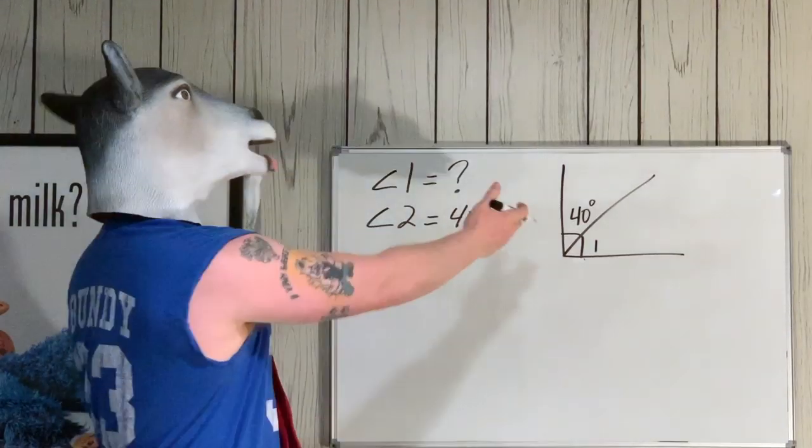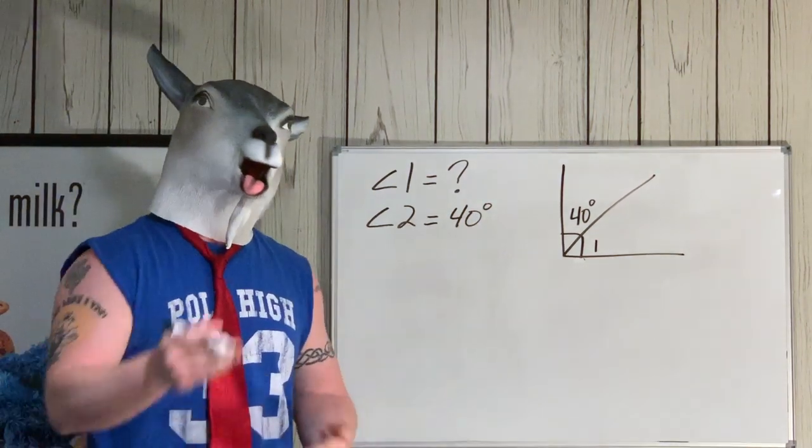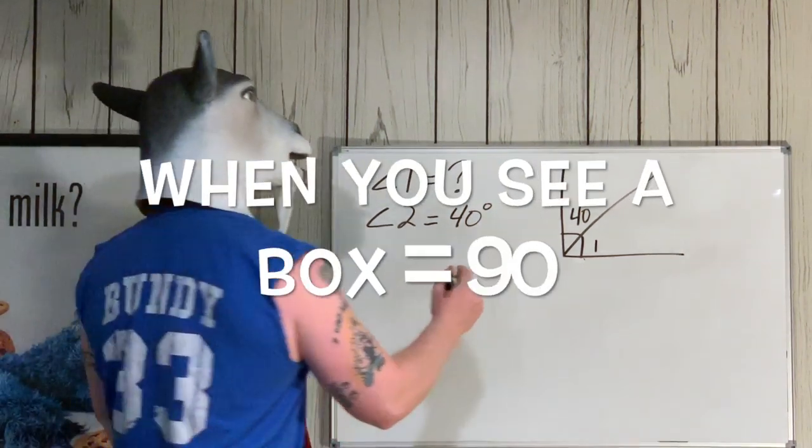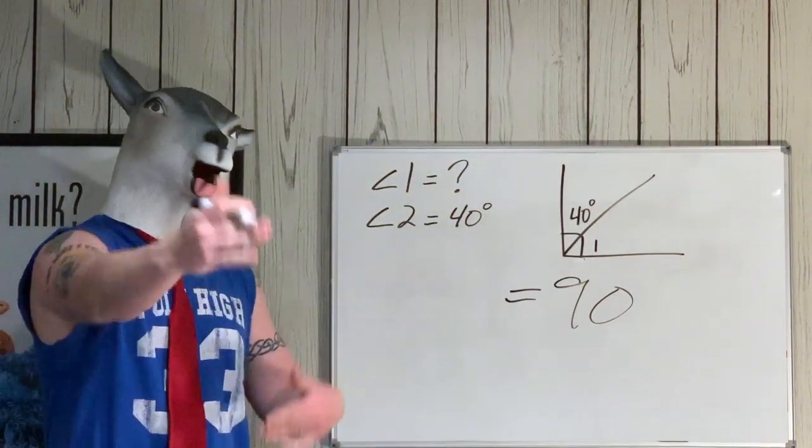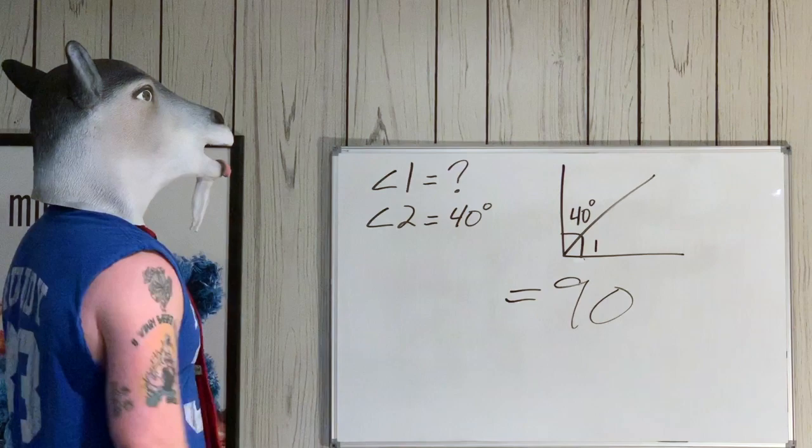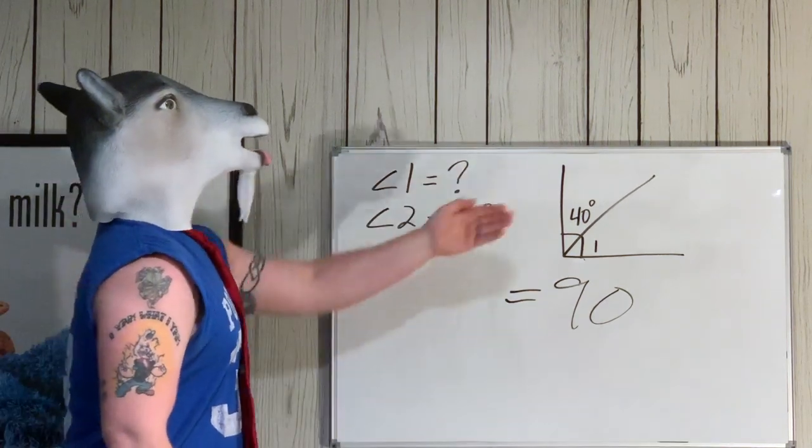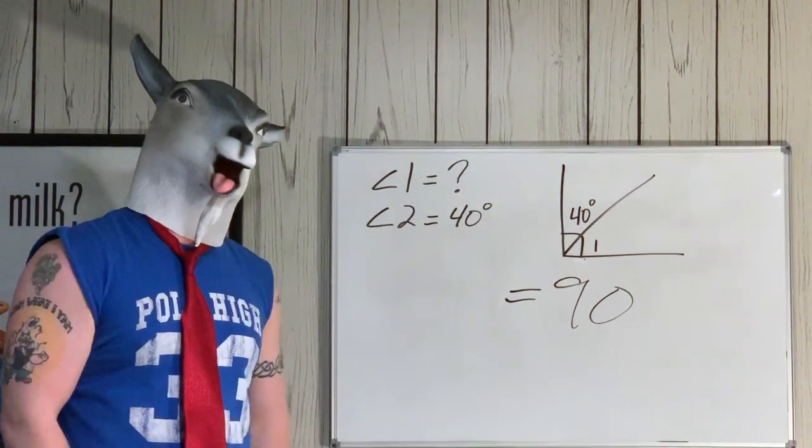So listen, soon as you see that box, you know right away all you gotta do is put equals 90. Boom, first part done. How easy is that? So now we know that this angle plus that one equals 90 degrees.